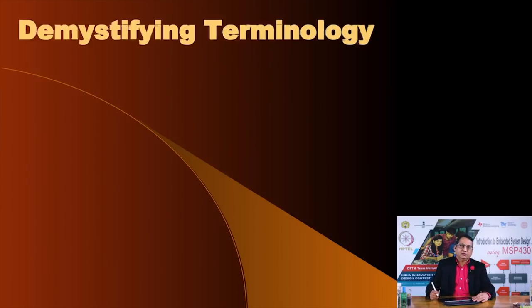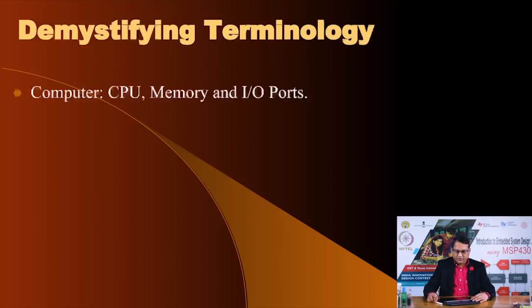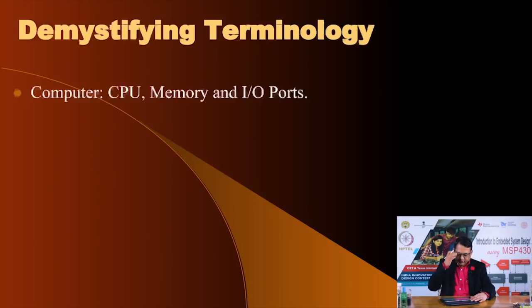Now that we have seen the major differences between embedded computers and general purpose computing devices, let us go through some key terminologies. The first term is 'computer' — a computer is nothing but a system which has a CPU (central processing unit), memory, and input/output ports. Let me draw a diagram to illustrate it.